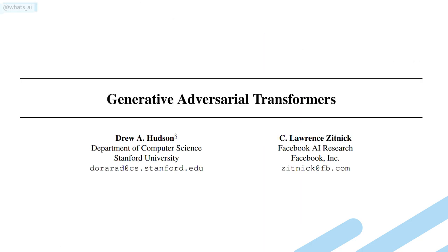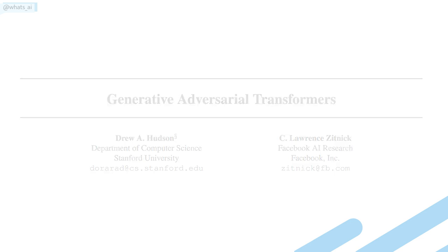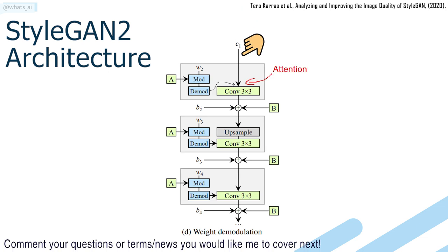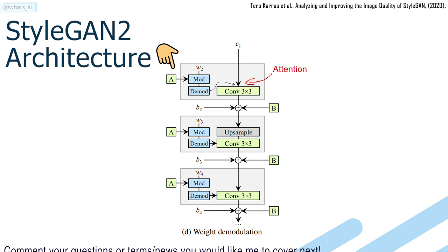Instead, they leverage Transformers' attention mechanism inside the powerful StyleGAN2 architecture to make it even more powerful. Attention is an essential feature of this network, allowing it to draw global dependencies between input and output — specifically between the input at the current step of the architecture and the latent code previously encoded.